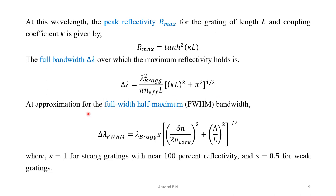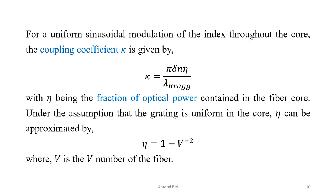An approximation for the full width half maximum bandwidth is given by: delta lambda_FWHM = lambda_Bragg × (s × δn / (2 × n_core))² + (lambda / L)²)^(1/2), where s equals 1 for strong gratings with near 100% reflectivity and s equals 0.5 for weak gratings. The coupling coefficient is given by π × δn × η / lambda_Bragg, where eta is the fraction of optical power given by eta = 1 minus V^(−2), and V is the V-number of the fiber.